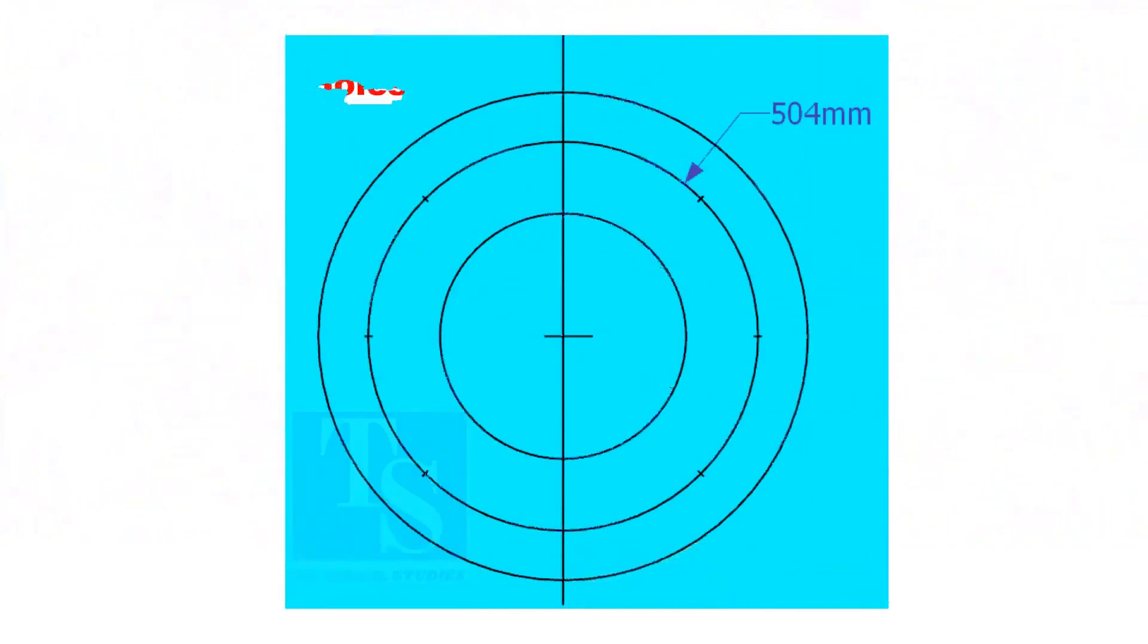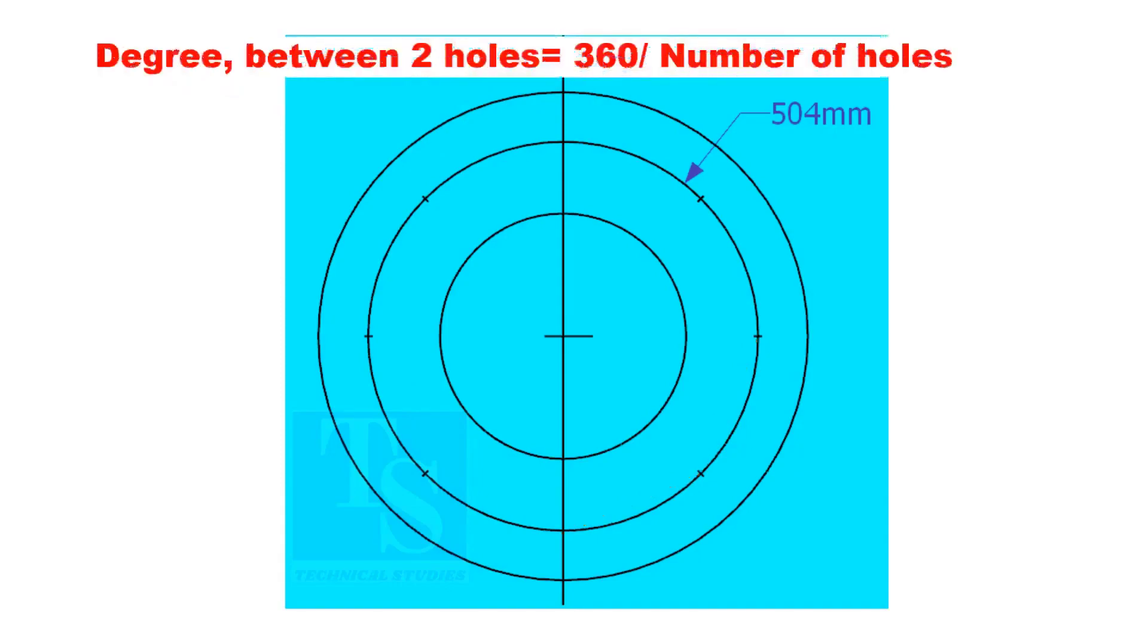Since the number of the holes is 8, divide the PCD into 8 equal parts. To divide the circle easily and accurately, let us find the cord length of the holes. If you divide 360 by the number of holes, you will get the angle between two holes.